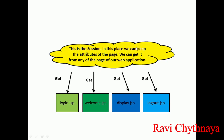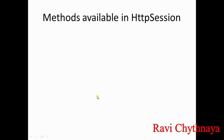This is a simple example showing the full picture of JSP. This is the place we call the session, and here we can keep the attributes of the page. The attribute — for example, if I want to create a session for a user using their username — I can keep that attribute username here, and it can be accessed from login.jsp, welcome.jsp, display.jsp, and logout.jsp. I can keep the value from login.jsp and access it from welcome.jsp, or keep it from any page and access it from any other page in my web application.